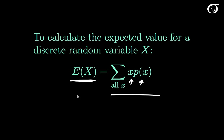We call that parameter E[X], or sometimes we refer to it as mu — the Greek letter mu — meaning the mean of the random variable X, or the mean of its probability distribution.